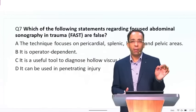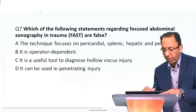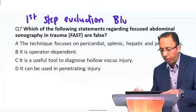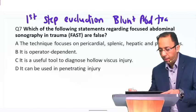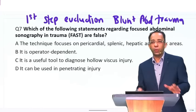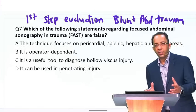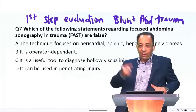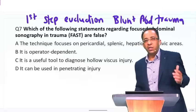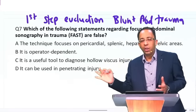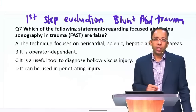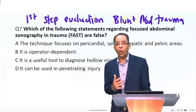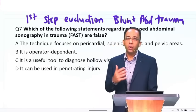FAST trauma — blunt abdominal trauma. FAST is the first step in evaluation of a patient with blunt abdominal trauma. Why do we do FAST? In blunt abdominal trauma we don't know where the injury is — there is no stab wound, this is not penetrating trauma. The surgeon wants to know: is there any solid organ injury? Do I need to operate? If there is solid organ injury, such as a splenic injury, you will have hemoperitoneum, and FAST is trying to detect hemoperitoneum.